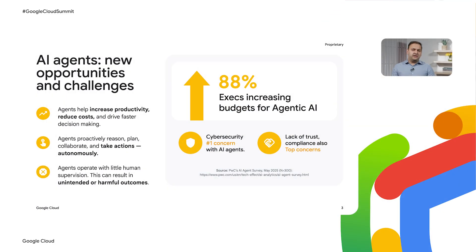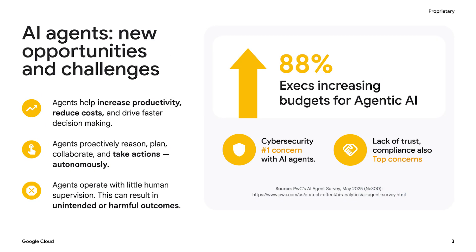AI agents are here. They are already on the job and increasingly getting entrenched into enterprise workforce. 88% of executives are increasing their budgets for agentic AI, and many are already realizing measurable business value. They are convinced that AI agents can deliver competitive differentiation, unprecedented customer experiences, and increase workforce productivity with lower costs. This stems largely from agents' ability to take actions autonomously, building on meteoric advancements in LLMs and AI/ML — which can also result in unintended and harmful outcomes that current systems are not yet equipped to mitigate.